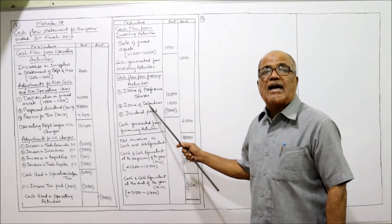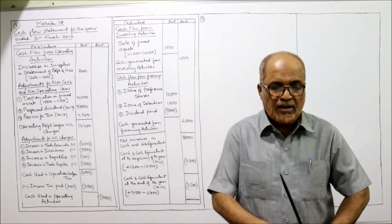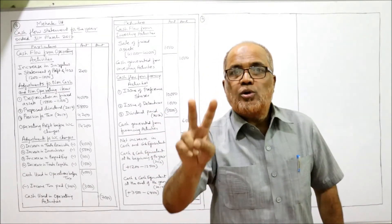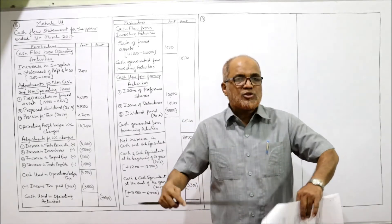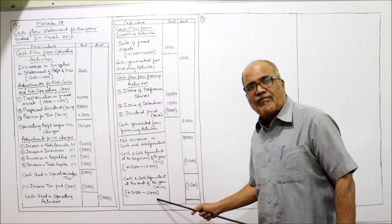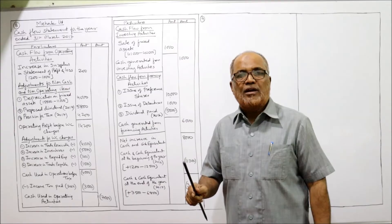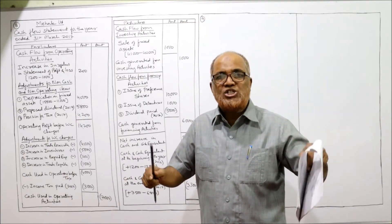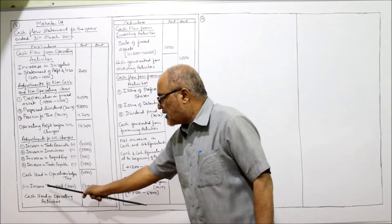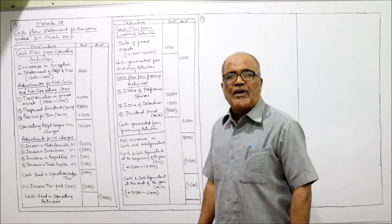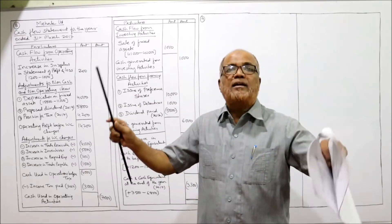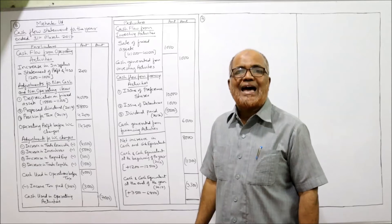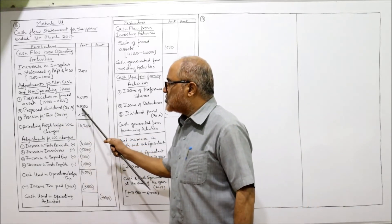Last year's proposed dividend is assumed as paid during the current year. That dividend paid will come into financing activity — dividend paid 2016. So three new points in this problem: first, bank overdraft should be deducted from cash. Second, current year's provision for taxation is a non-cash item, and last year's provision is assumed paid — income tax paid 2016. Third, current year's proposed dividend is a non-cash item, and last year's proposed dividend is taken in financing activity as dividend paid.